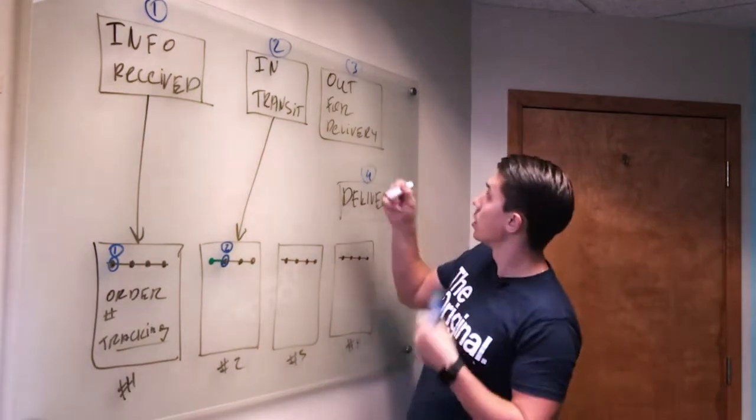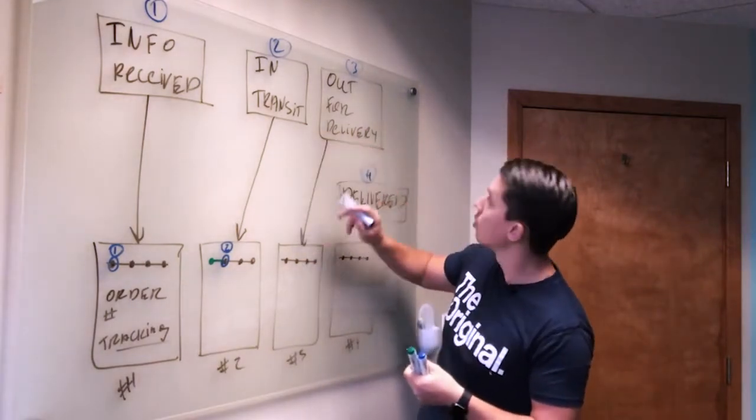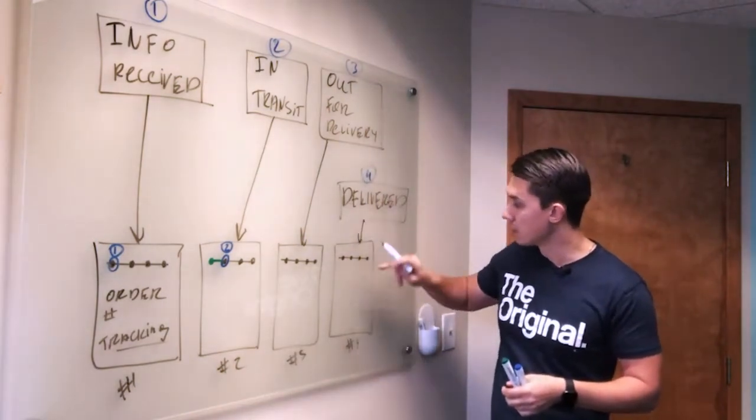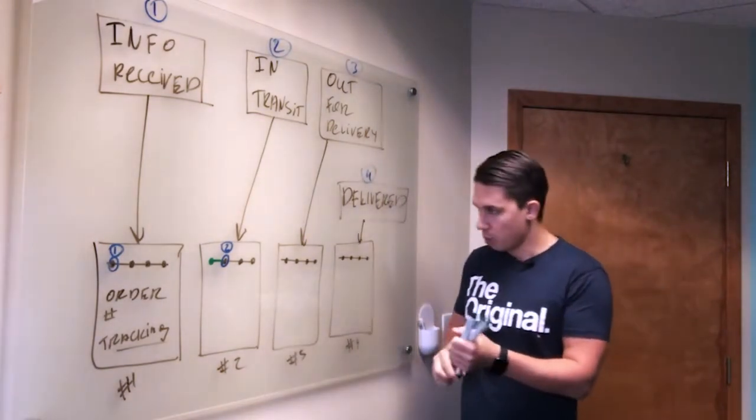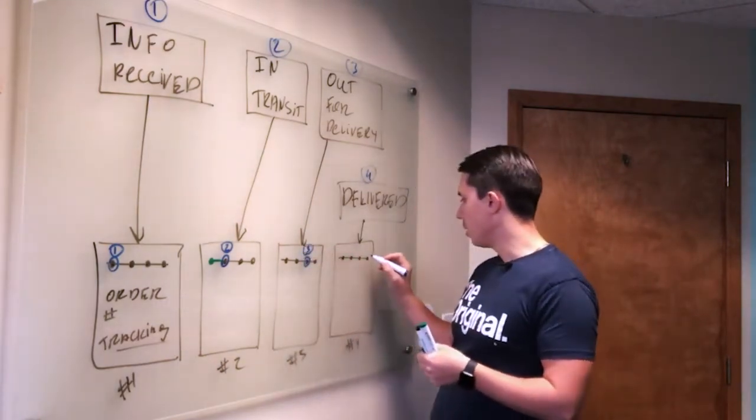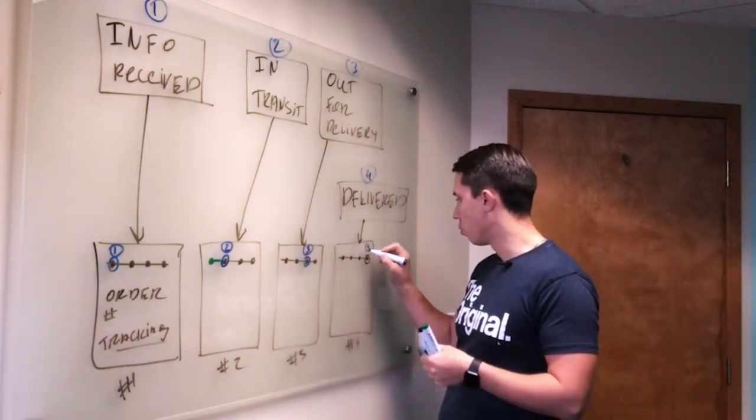Same thing with number three. So when it's out for delivery, we'll send them this email, and when it's delivered, we'll send them that email. So same thing, we will do here status number three, and here status number four.